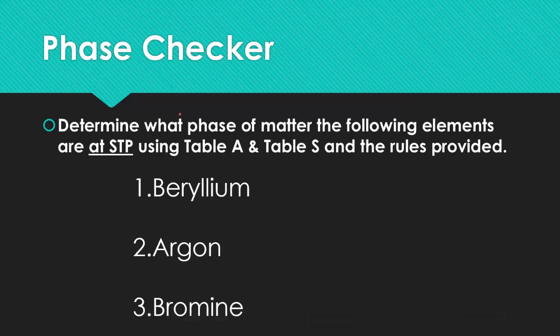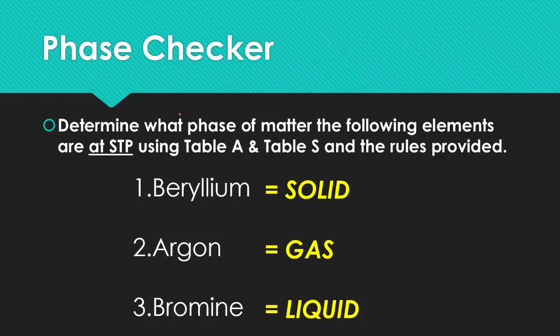So let's try to determine the phase of matter for the following elements at STP. Use table A, use table S, and the rules that we provided. When we look at beryllium, beryllium is considered a solid at standard temperature and pressure. Argon is a gas, and bromine is a liquid.